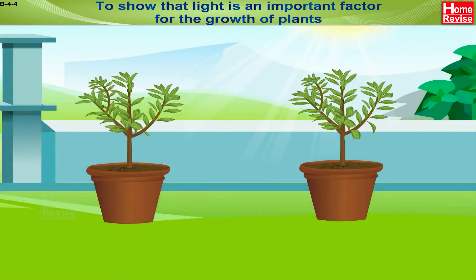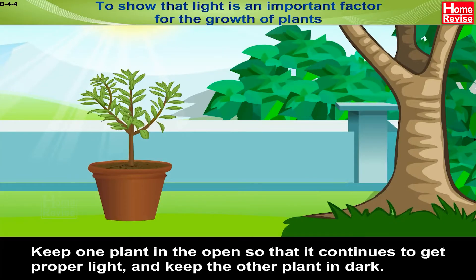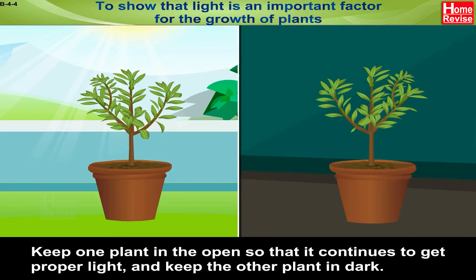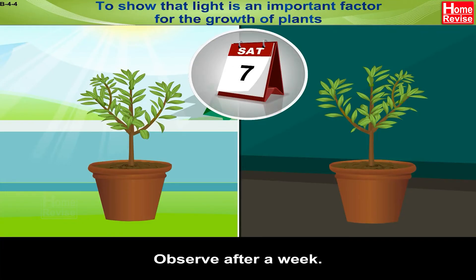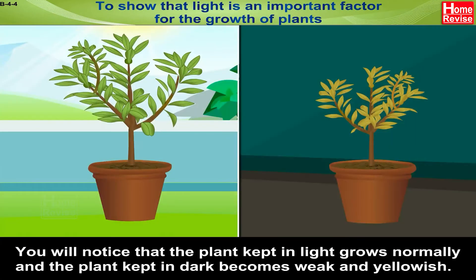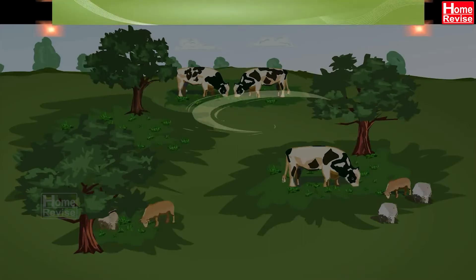Activity to show that light is important for plant growth: Take two healthy potted plants such as balsam. Keep one plant in the open so it continues to receive proper light, and keep the other in the dark. Observe after a week. You will notice that the plant kept in light grows normally, while the plant kept in the dark becomes weak and yellowish. This shows that light is an important factor for the normal growth of a plant.